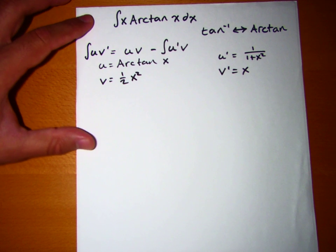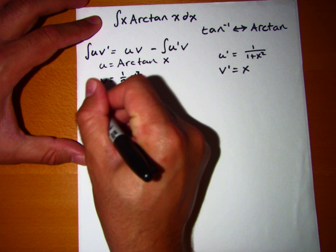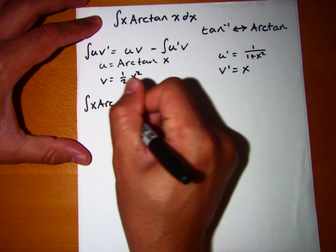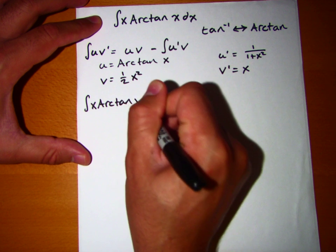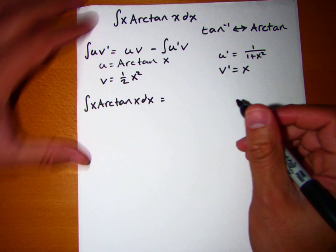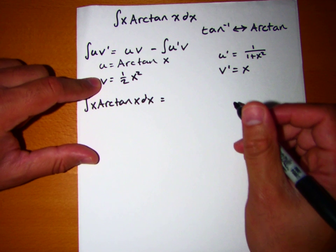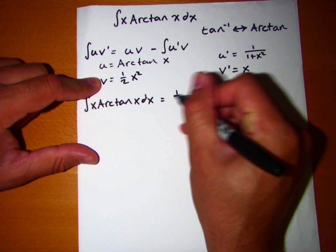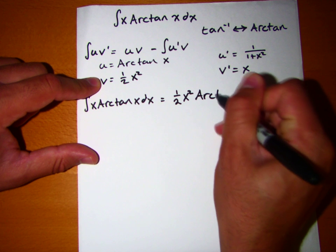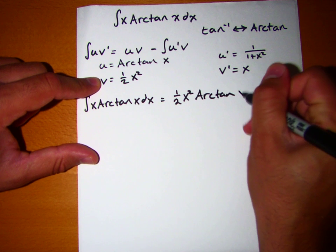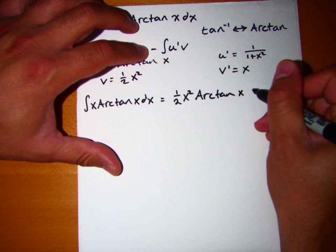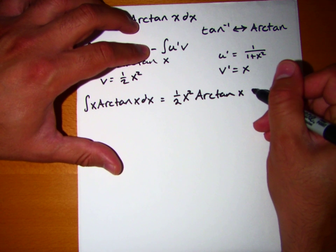So let's see what happens if we plug all this in. We get the integral of x arctangent x dx is equal to u times v, so that's going to be 1 half x squared arctangent x minus u v, excuse me, minus u' v.